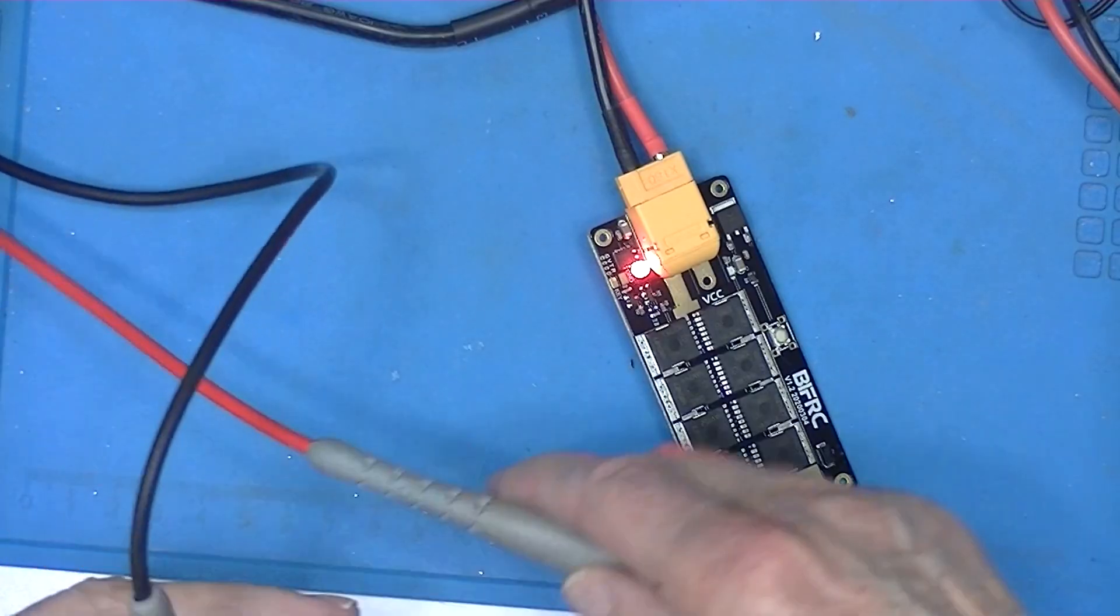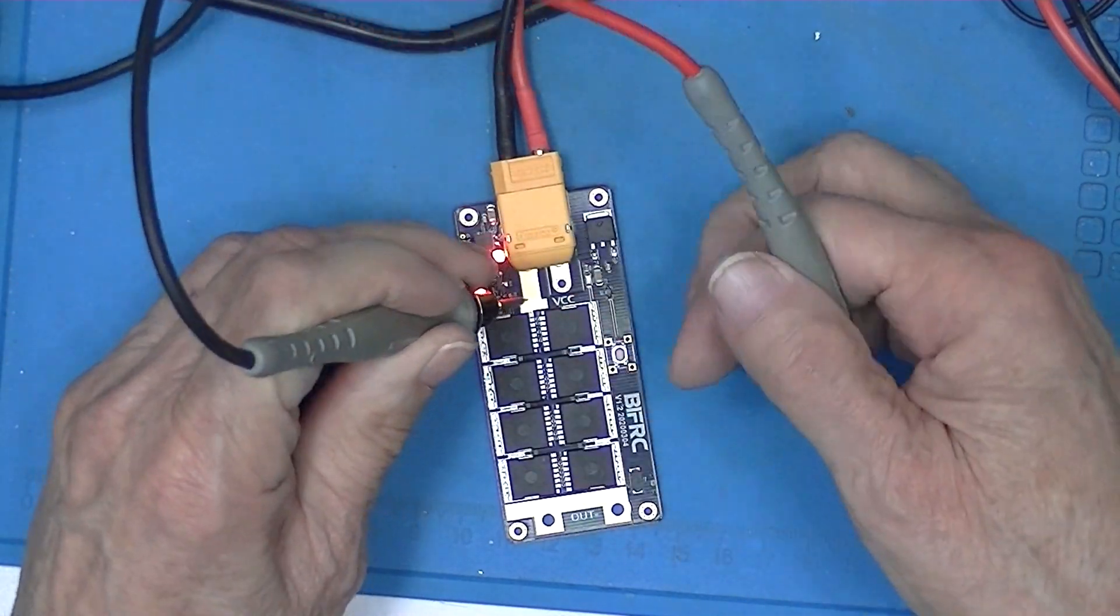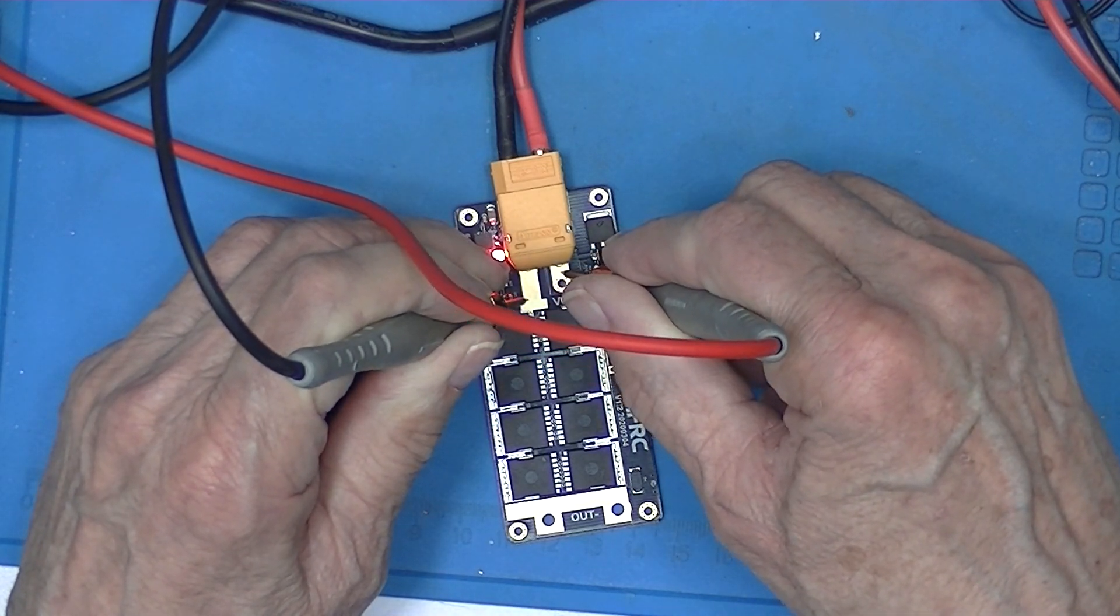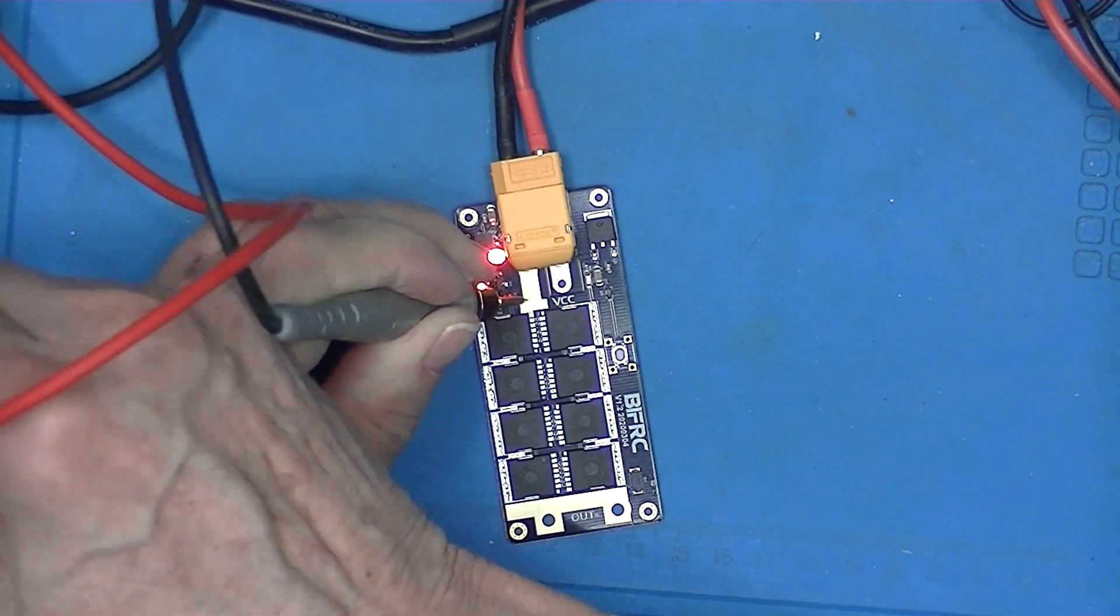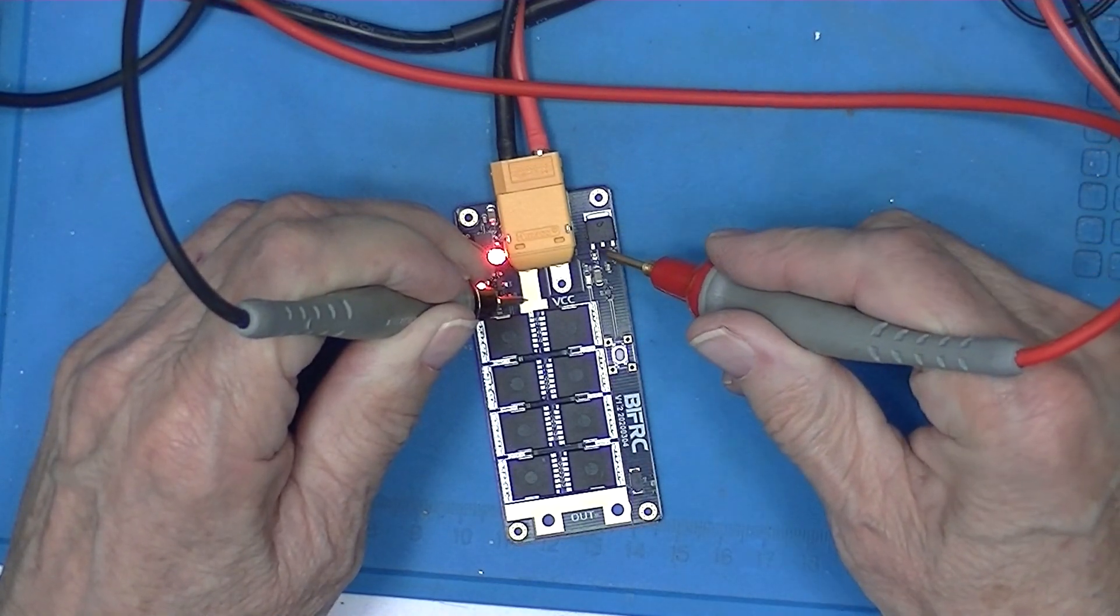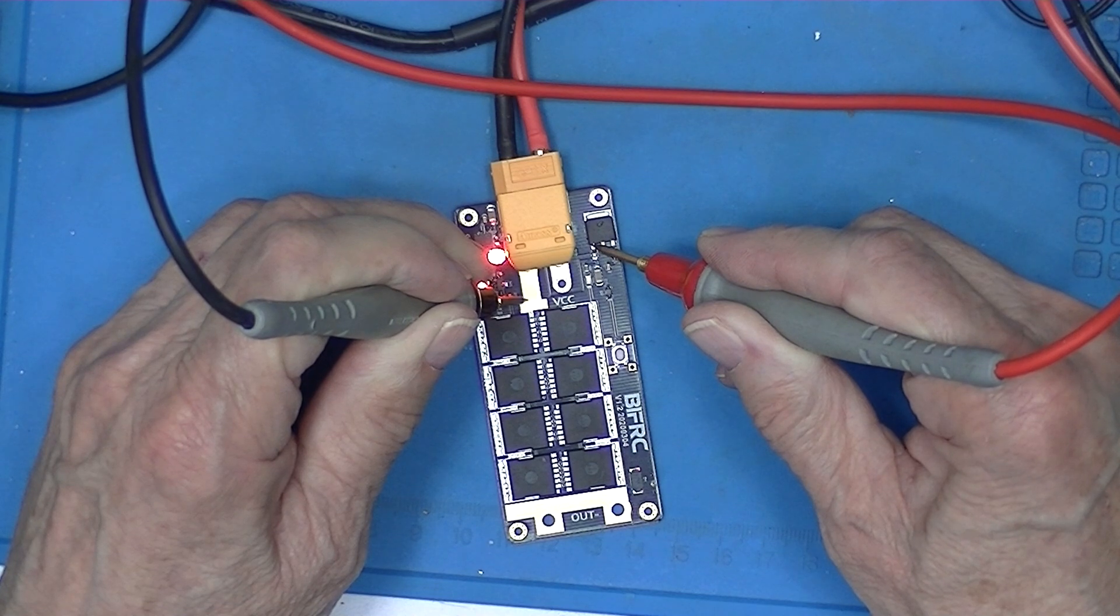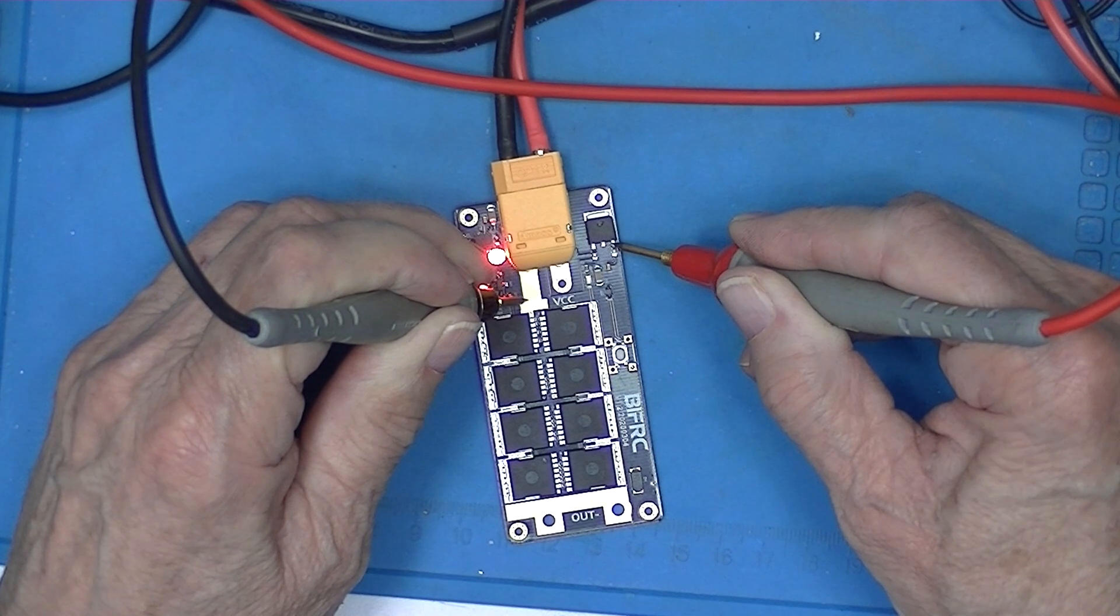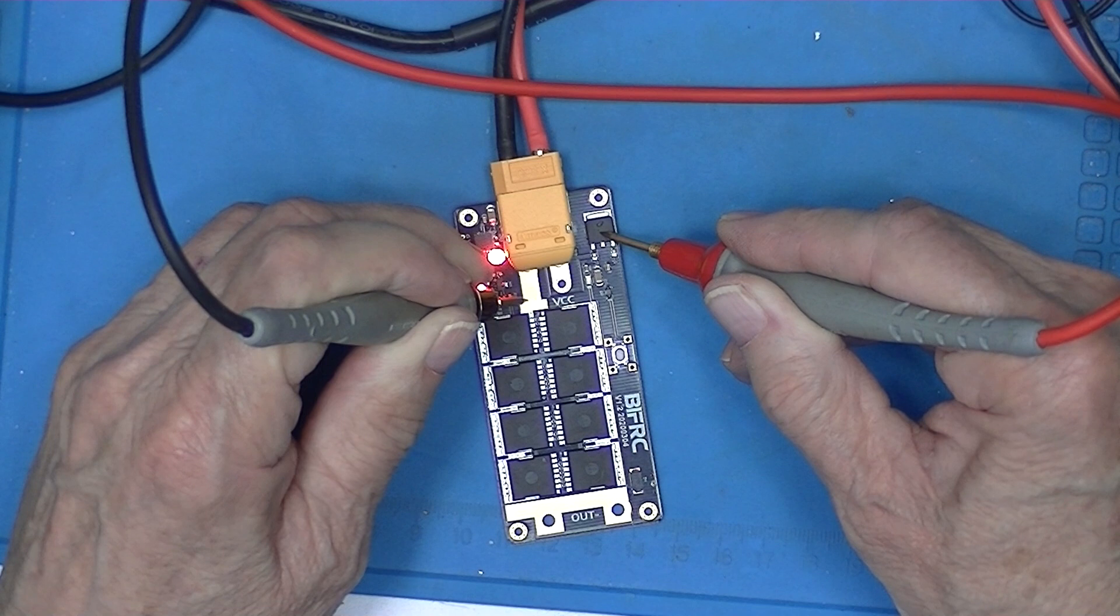I've set the bench meter back to volts and it looks like I have 8.2 volts there. Remember that's a 7.4 volt battery and we should have the same thing here, and we do, and over here I have 5.02. So that is a 5 volt regulator.